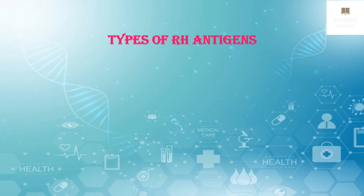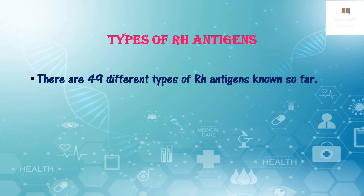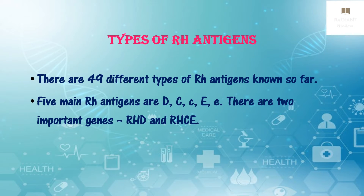Now let us discuss the types of RH antigens. There are 49 different types of RH antigens known so far. Among them, there are five main RH antigens known as D, C, c, E, and e antigen. There are two important genes: RHD, which codes for D antigen, and RHCE, which codes for a combination of C, E, c, and e antigen.